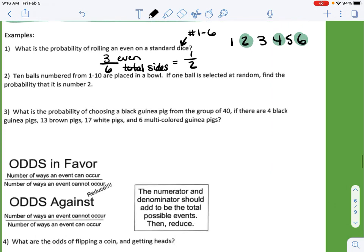For our next example, 10 balls numbered 1 to 10 are placed in a bowl. If one ball is selected at random, find the probability that it is number 2. So once again, we have 10 balls: 1, 2, 3, 4, 5, 6, 7, 8, 9, and 10.